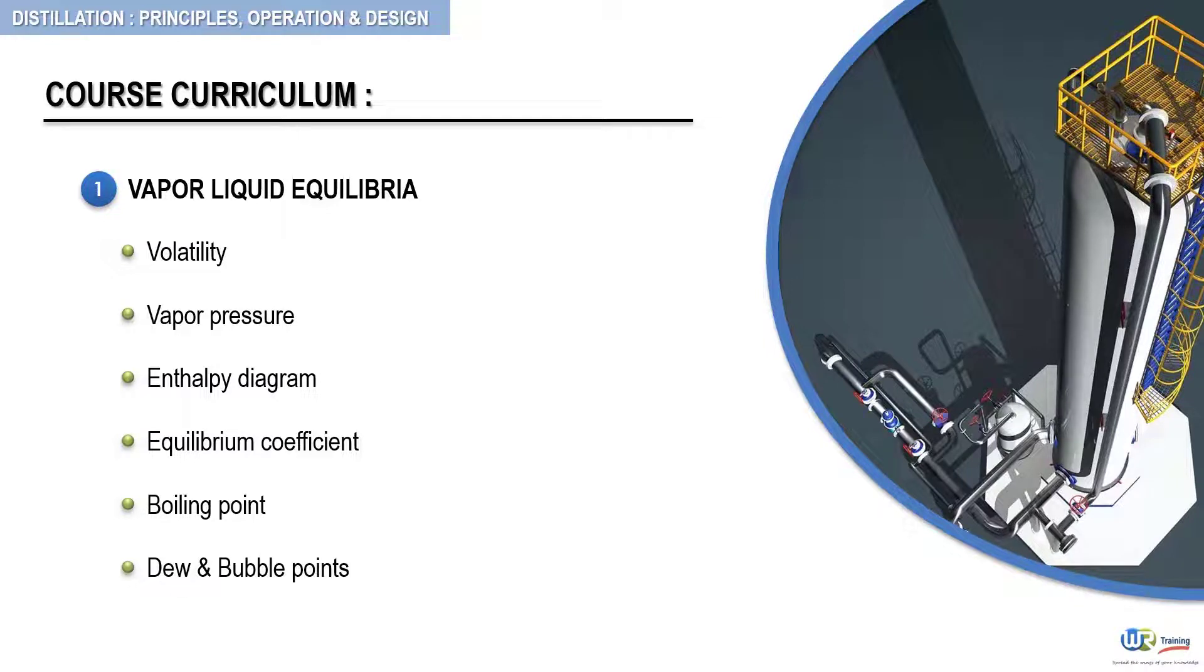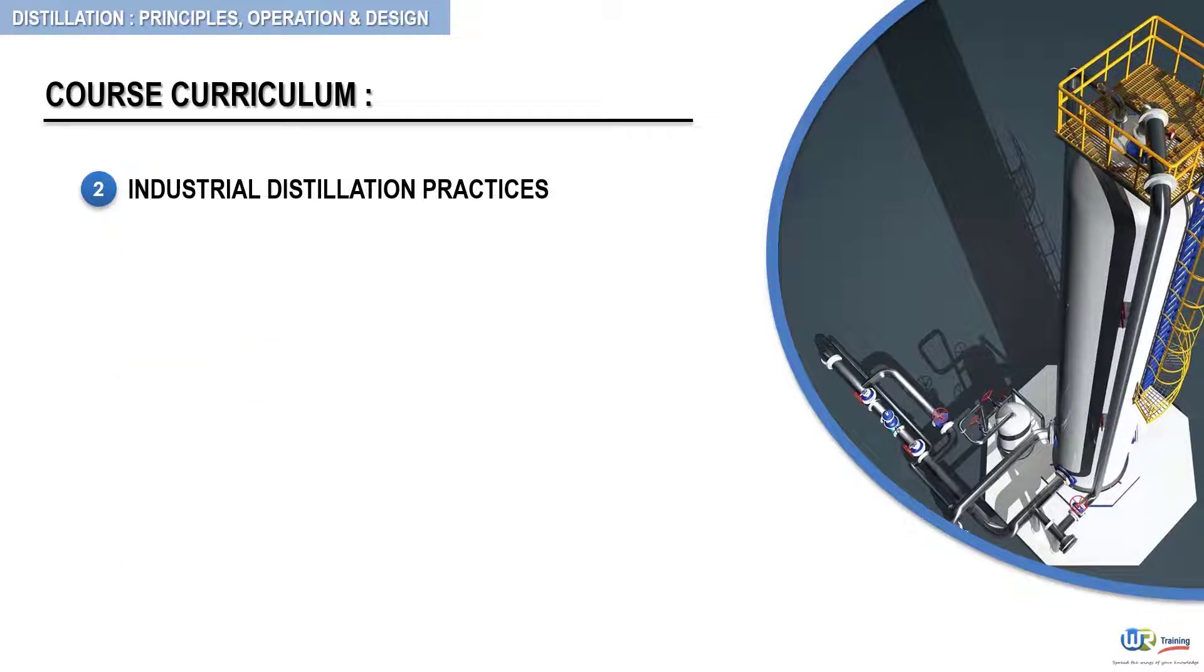In the second section, we examine typical industrial distilling columns. How they are operated, how they are controlled, and how they are monitored.